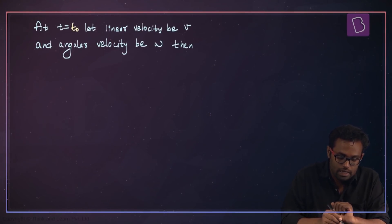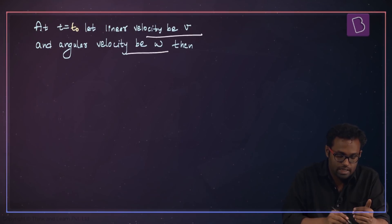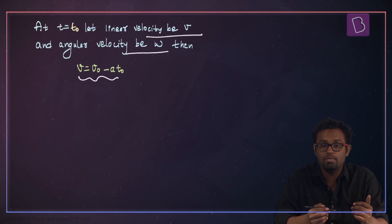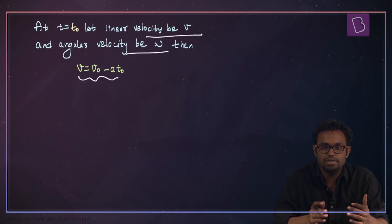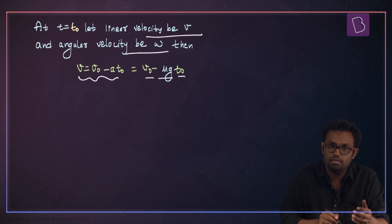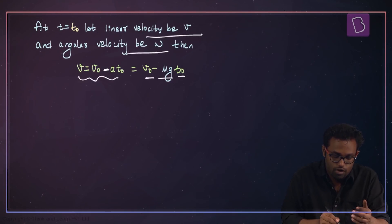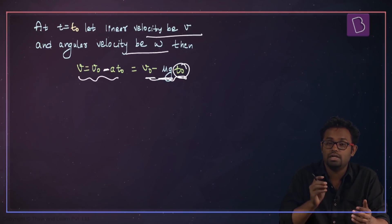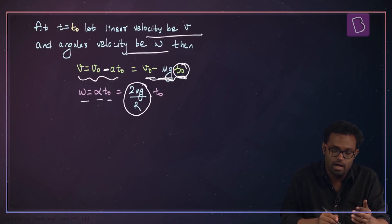At t equal to t₀, let the linear velocity be v and the angular velocity be ω. Using equations of motion, since the retardation is constant, v equals v₀ minus a times t₀, which becomes v₀ minus μg·t₀. And ω equals α times t₀, which gives 2μg/r times t₀.